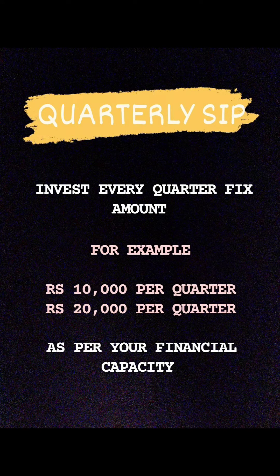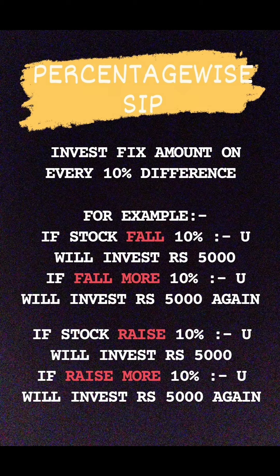Quarterly SIPs: in this you have to invest every quarter a fixed amount, for example rupees 10,000 per quarter and rupees 20,000 per quarter. However, in quarterly SIPs you have to invest more than in a monthly SIP.